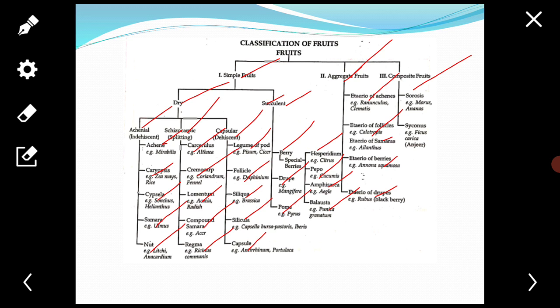Fifth is the etaerio of drupes. Fruits occur in raspberry and blackberry. The individual fruitlets are often called droplets. These are small and present on a disc-shaped or conical thalamus. Example: blackberry, Rubus.